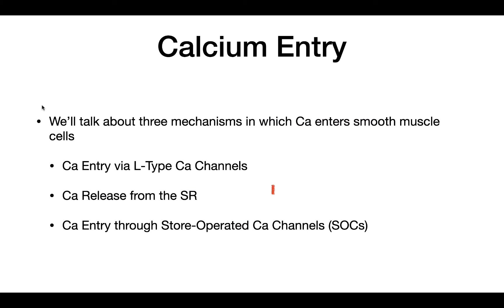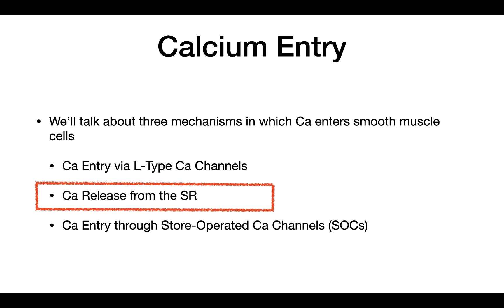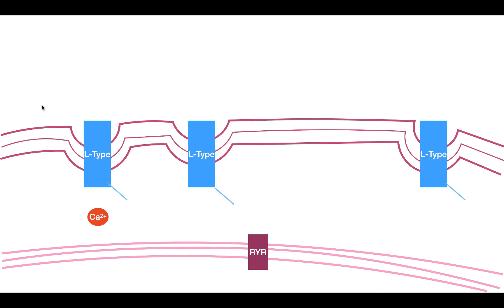Now let's talk about the second way: how calcium is going to be released from the sarcoplasmic reticulum. Inside the sarcoplasmic reticulum, on its plasma membrane, we have a ryanodine receptor. The calcium that came into the cell through the L-type calcium channels is now going to interact with the ryanodine receptor and cause it to open. When the ryanodine receptor opens, it causes calcium to flow from the sarcoplasmic reticulum into the cytosol.